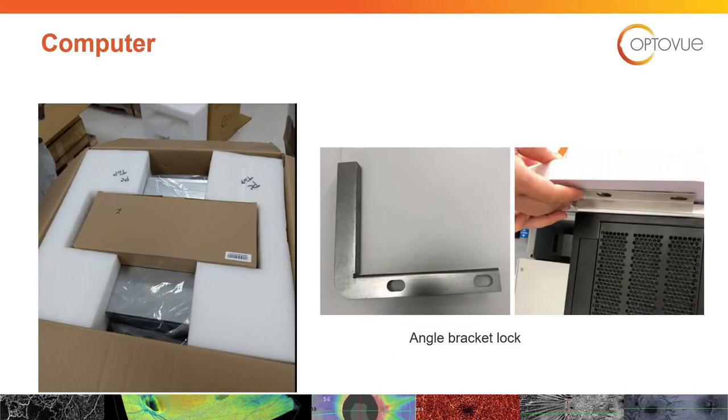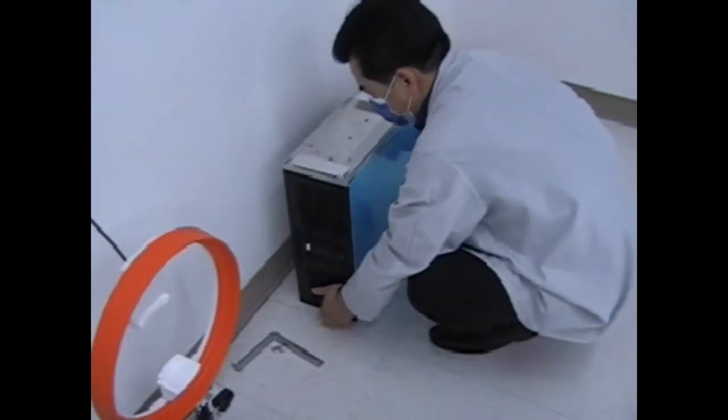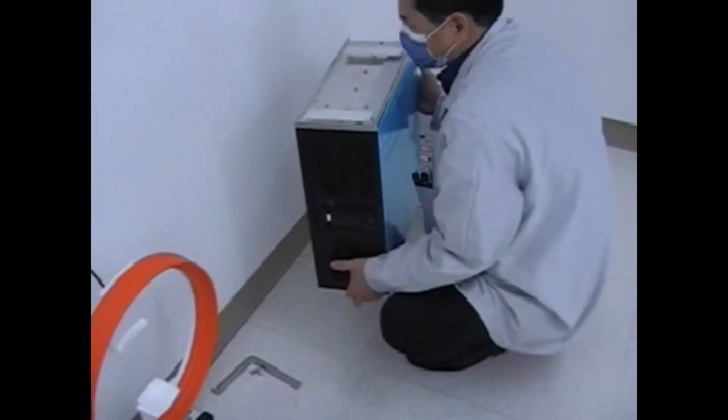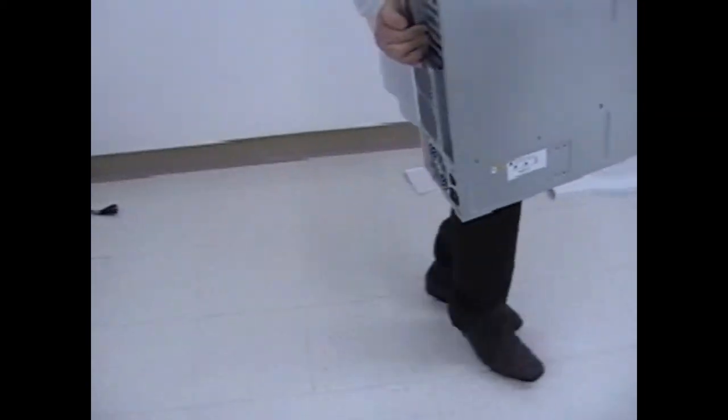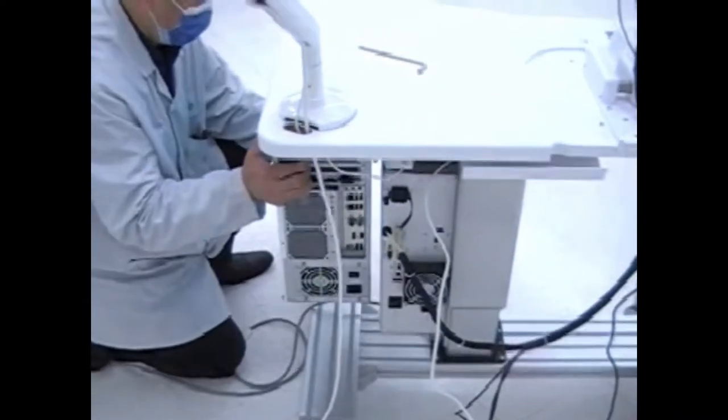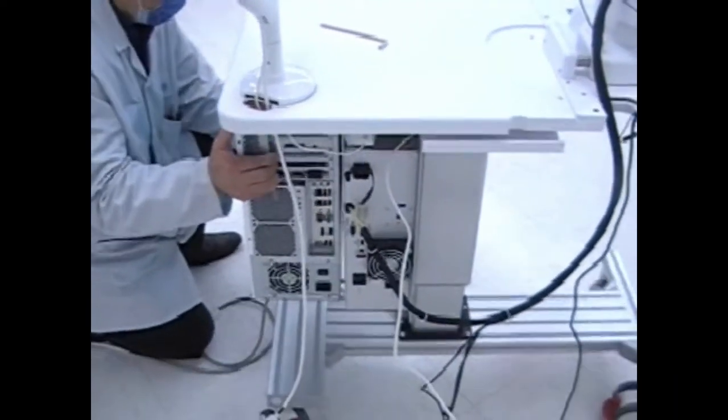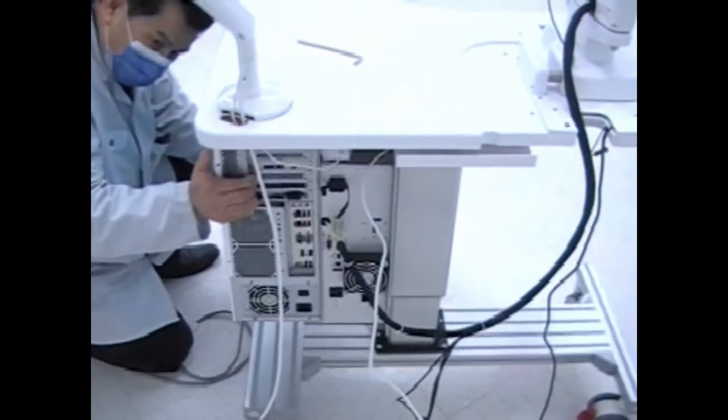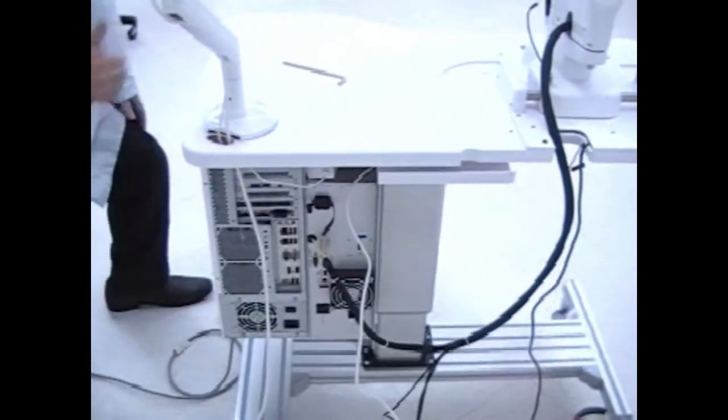Next we want to hang the computer on the hooks down below and add the locking bracket. Lift carefully, the computer is heavy. Make sure the table is at a good working height. Lift it up evenly and slide it onto the hooks.